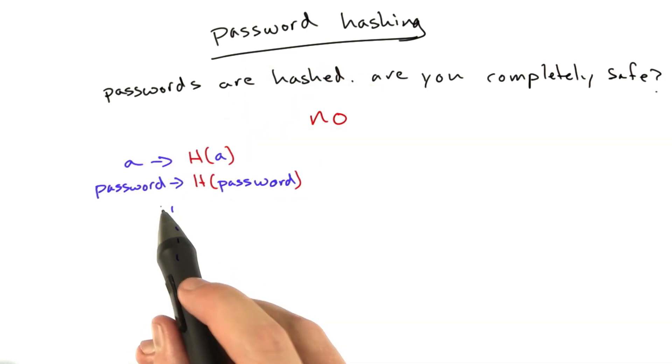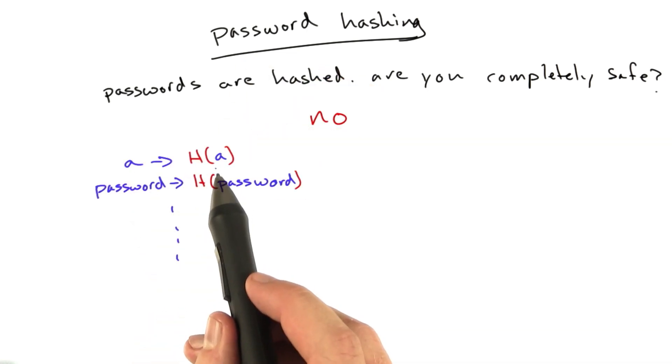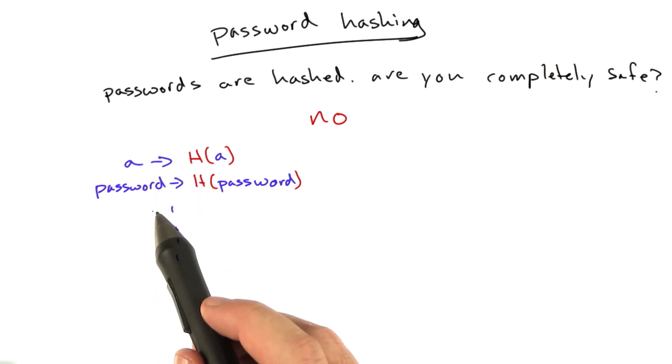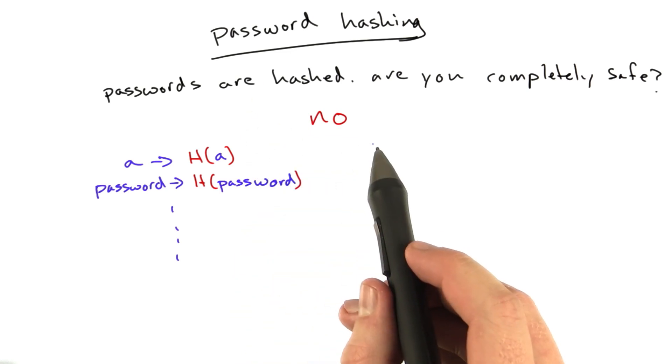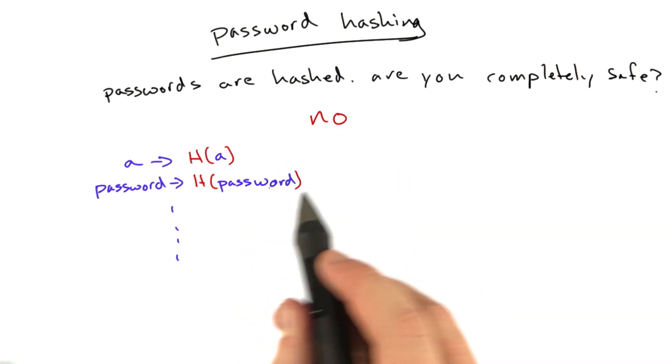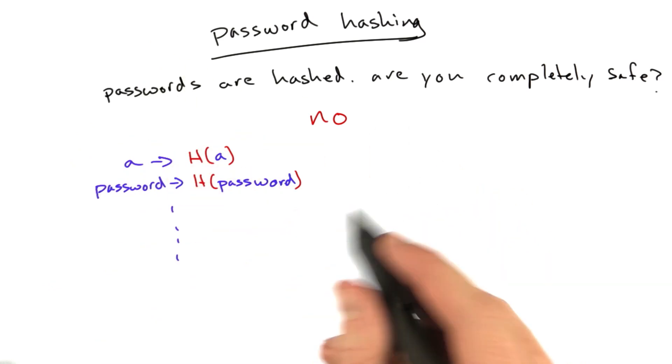If someone were to go through and create a mapping of every word to the hash of that word, that would be a problem because remember, the whole strength of this hashing problem is that it's really hard to get from the hash to the plain text that led to that hash.